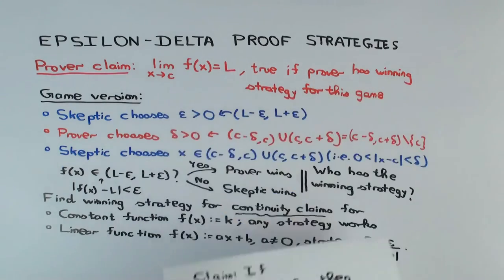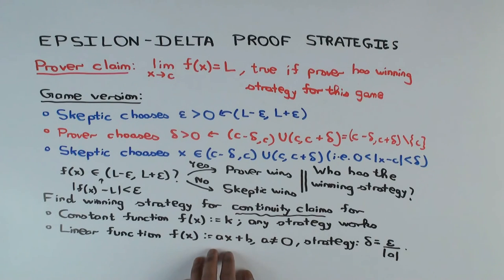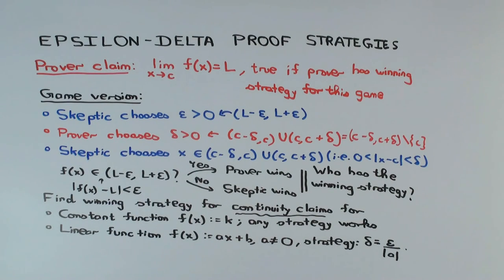So in the constant case, any strategy worked. In the linear case, the strategy that works is delta equals epsilon over |a|. If you're given a specific function, like 5x plus 12, then the strategy is delta equals epsilon over 5. If the linear function is just f(x) equals x, then the strategy would be delta equals epsilon. In a subsequent video we will see the quadratic function case. There are other ways of showing more directly that these functions are continuous — what we have done here is explicitly show how the epsilon-delta definition works, as an illustrative exercise.